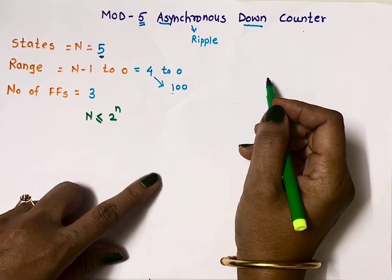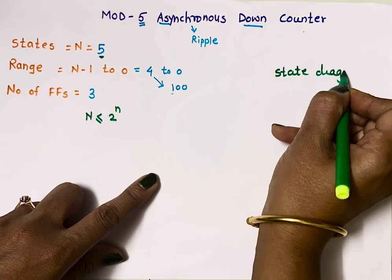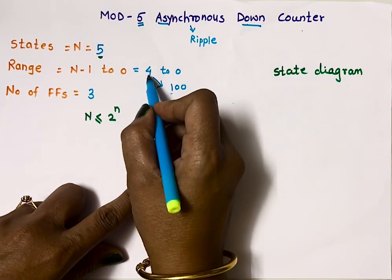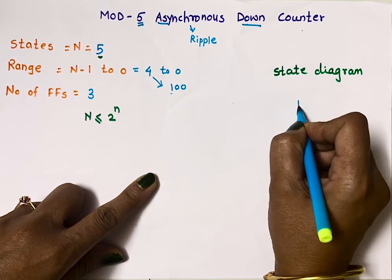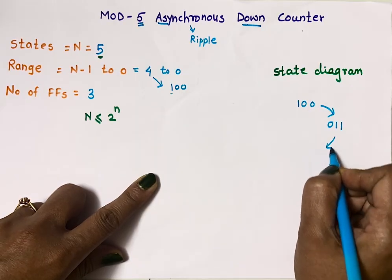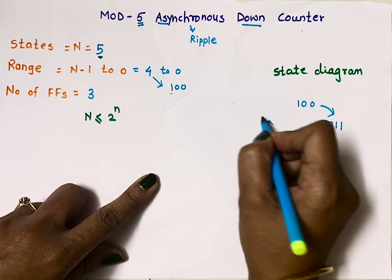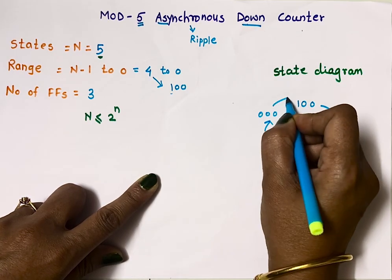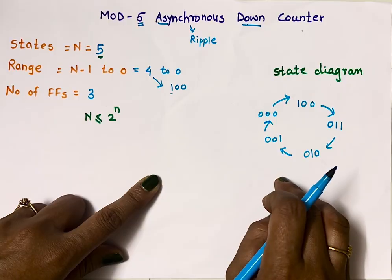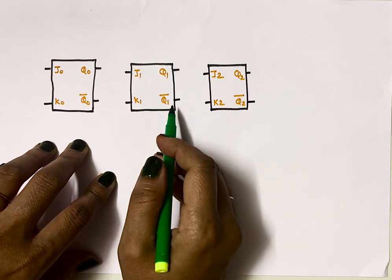First we will start with the state diagram. We have five states from 4 to 0. It will start counting from 4; the binary equivalent of 4 is 100. Then comes 3, then 2, then 1, then 0, and after 0 it will go back to 4, so it keeps rotating between these states. Now the state diagram is ready.